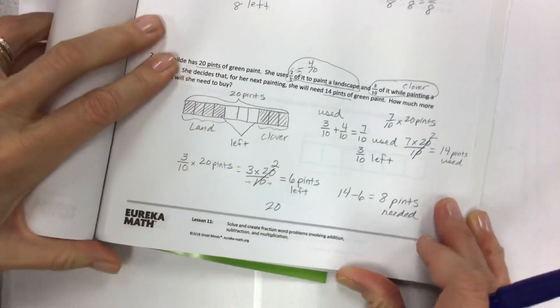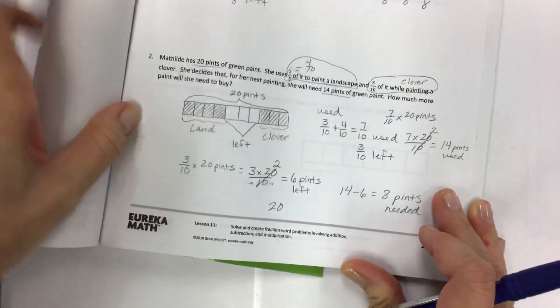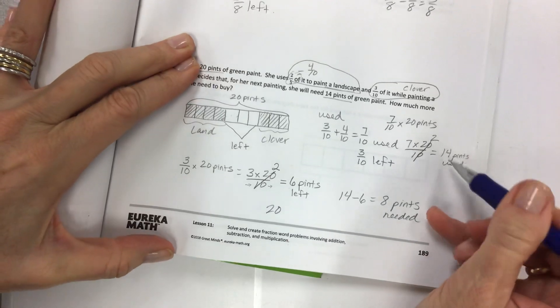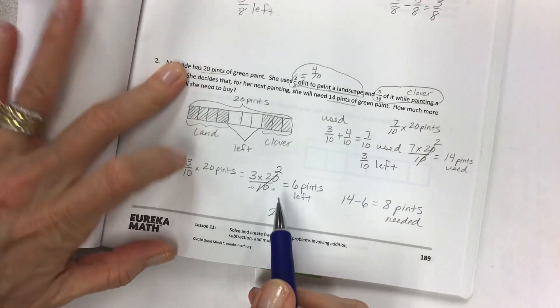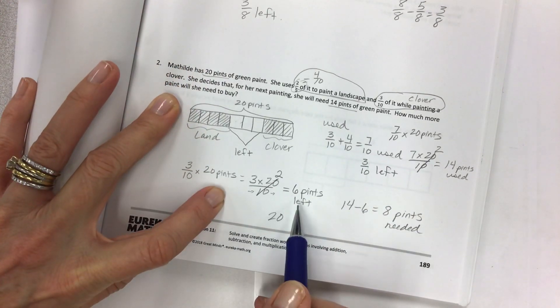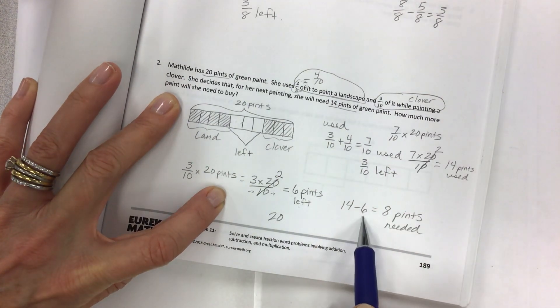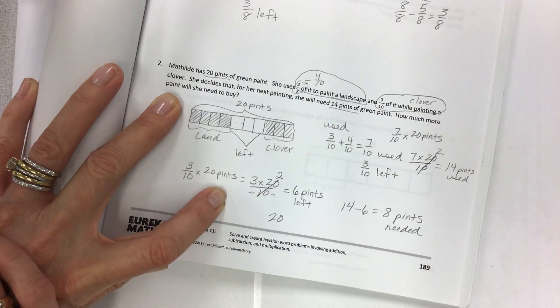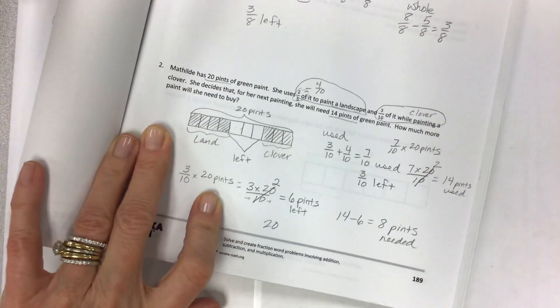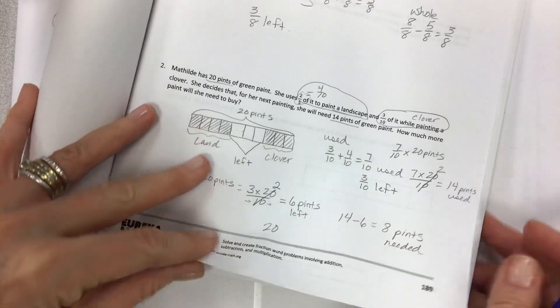So we can do the seven tenths of 20 pints, seven times 20 over 10. This is the used. 14 pints used. So now you can see put it all together. You've got your 14 minus six. Eight pints needed. So now here's the whole picture. Here's what's used in pints, here's what's left in pints. This is not enough. She needs the 14 pints. So 14 minus six equals eight pints.